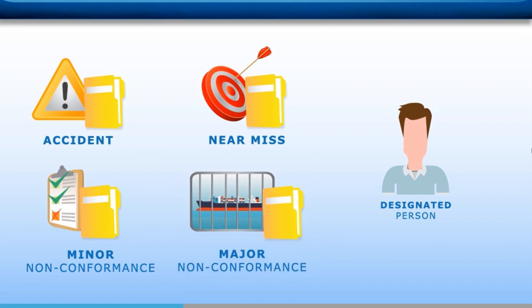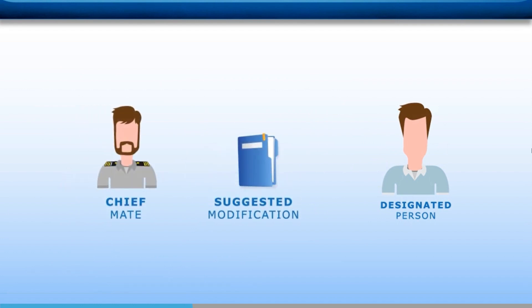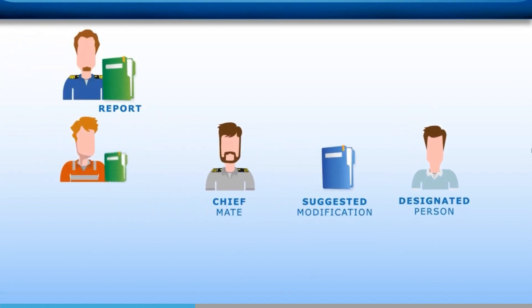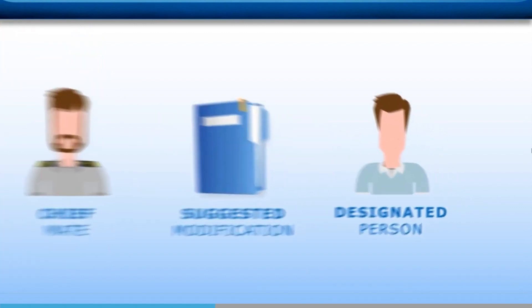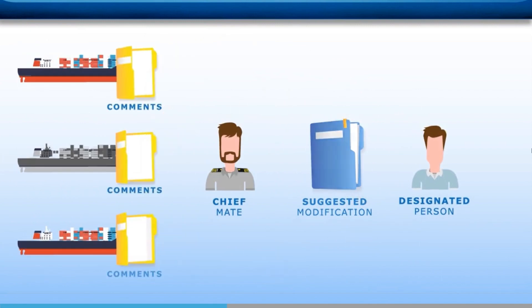Finally, it is the responsibility of each individual, ashore and on board, to report to the appropriate officer or manager whenever any part of the SMS has to be revised. A suggested modifications and improvements to the SMS report should be forwarded to the designated person. When the DP receives the report, it should be thoroughly reviewed, evaluated, and, if necessary, sent out for comments to all vessels before the change is applied.